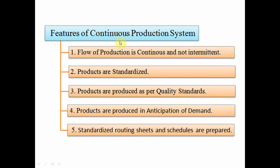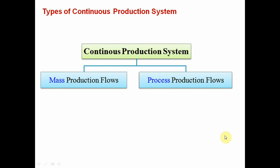Features of the continuous production system: the flow of production is continuous and not intermediate; products are standardized because the flow is continuously moving within the organization; products are produced as per quality standards; products are produced in anticipation of demand, which is called forecasting; and standardized routing sheets and schedules are prepared. There are mainly two types: mass production flows and process production flows.